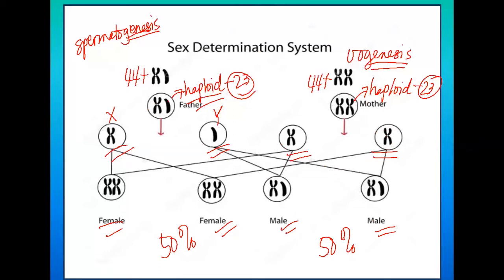There are chances in a family where most children could be female or mostly male — there are other factors to consider. But again, this is just probability. If asked to identify the probability of having a male and a female child, the answer is always 50 percent.